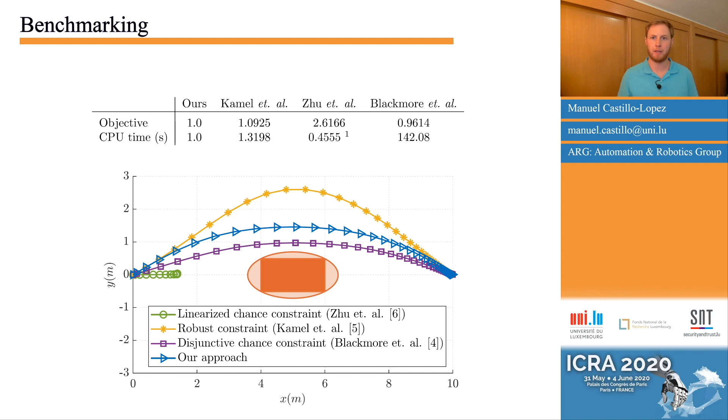As we can see, our approach solves a conservative approximation of Blackmore's solution over 142 times faster, at the price of 4% on optimality. Our computation fits in the range of real-time methods, while reducing their conservativeness and their tendency to fall into local minima.